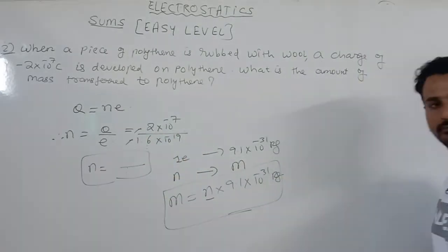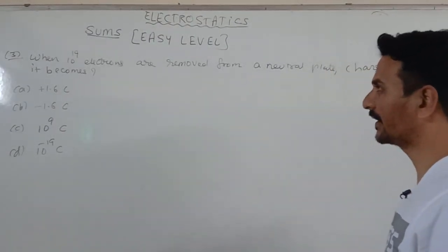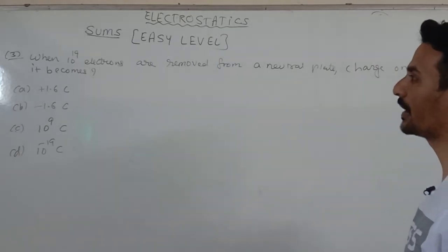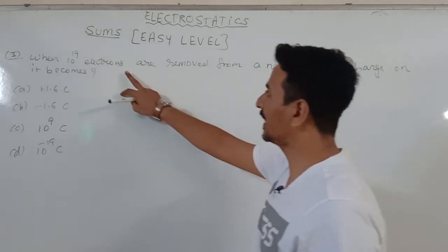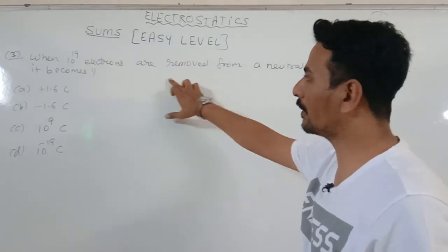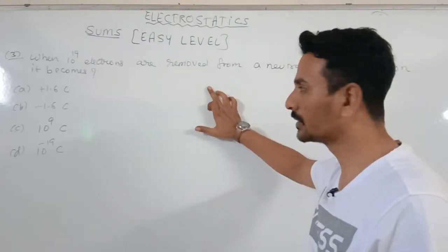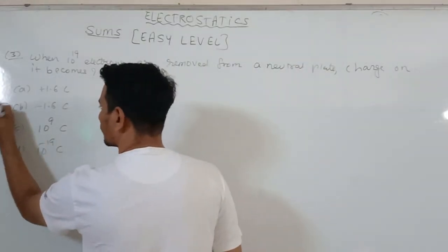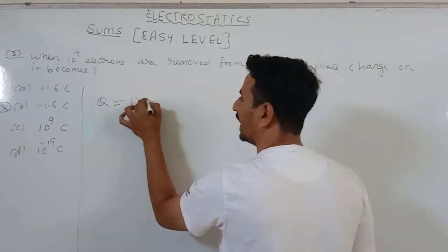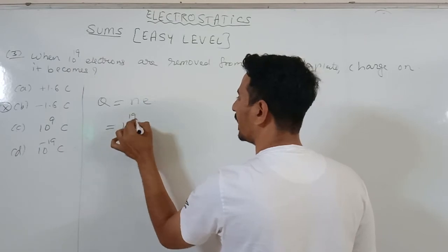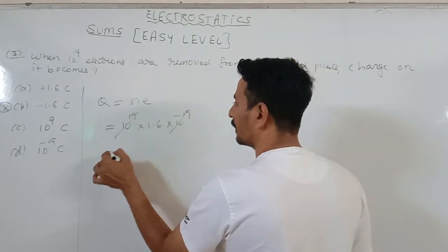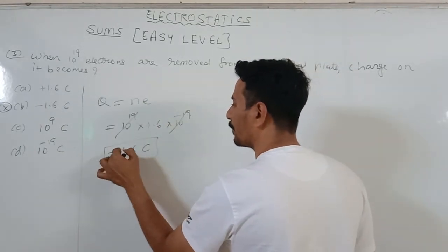Third MCQ: when 10¹⁹ electrons are removed from a neutral plate, what is the charge on it? Since electrons are removed, the plate will gain positive charge. Using quantization of charge, q = ne = 10¹⁹ × 1.6×10⁻¹⁹ = 1.6 coulomb positive charge. That is the answer.